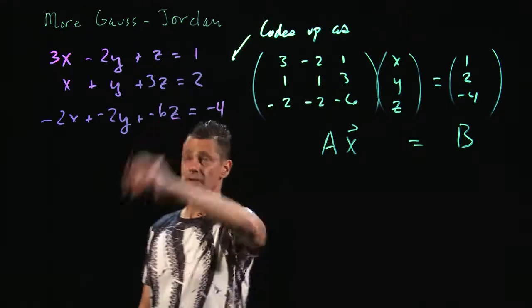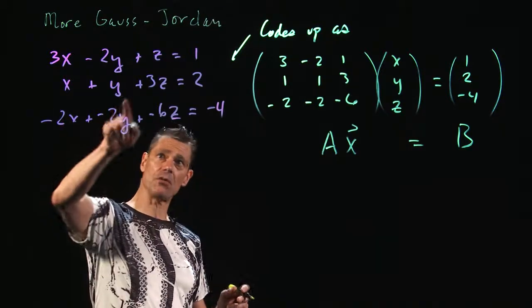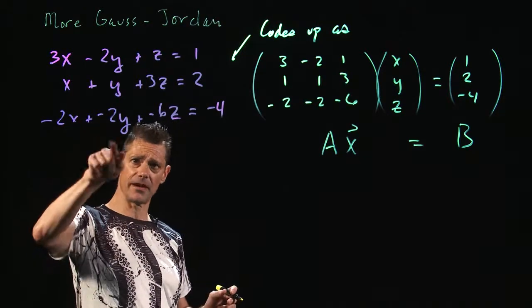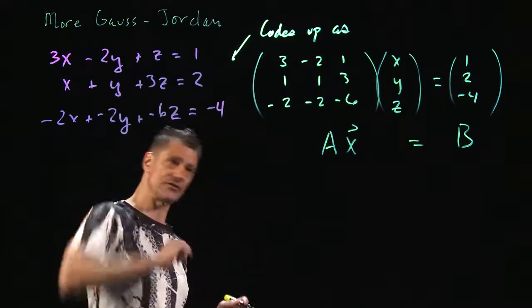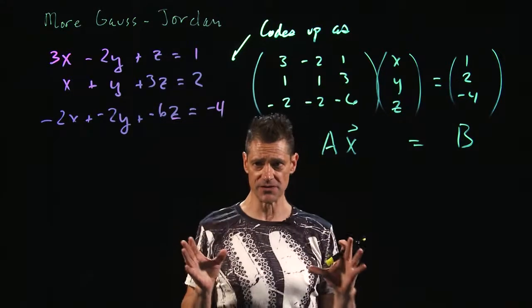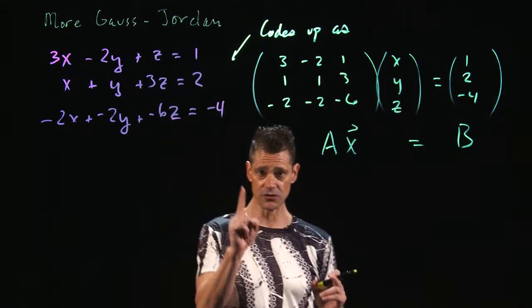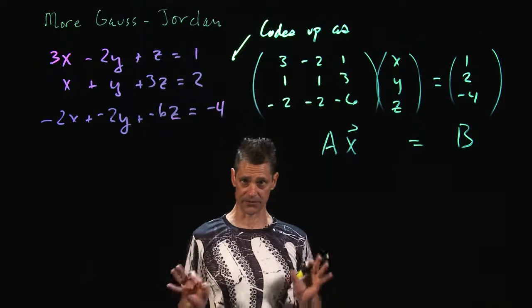So we have this system of equations: 3x - 2y + z = 1, x + y + 3z = 2, -2x - 2y - 6z = -4. However, this is a system of linear equations. It may have no solution, exactly one solution, or an infinite number of solutions. We're just going to have to see.